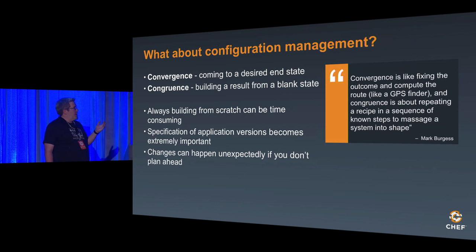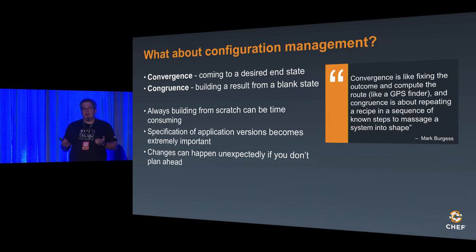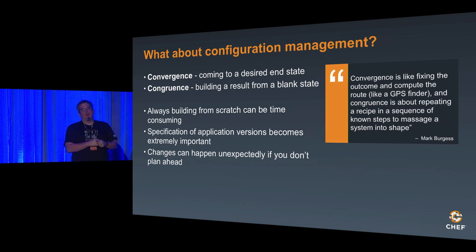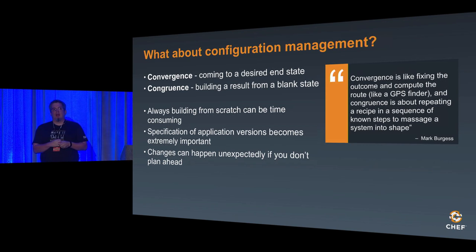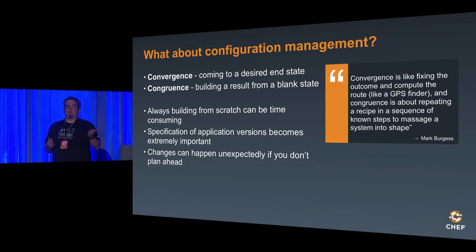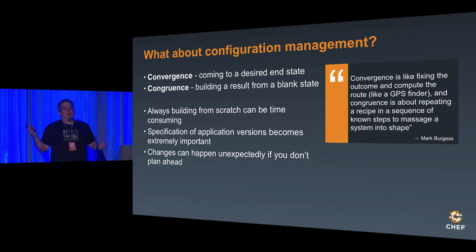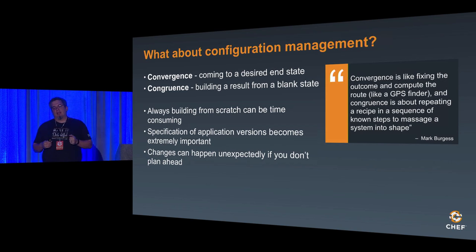Things that matter when you view configuration management from a congruence point of view: your application versions become really important. If you aren't pinning your versions, you might spin up one server at a specific version, then increment to a different version and spin up another server — now that server is at a different version than your original running state. You then have to converge that system to reach the known desired end state.